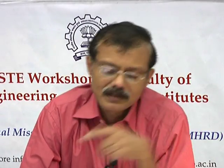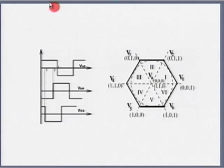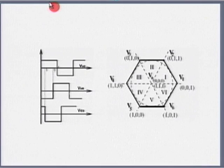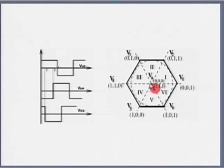If I know the d-axis and q-axis components, it is possible to determine the instantaneous values of Va, Vb, and Vc. In a 3-phase voltage source inverter there are 3 legs; at any given time 3 devices are on, giving 8 possible conducting states. Two of these are zero voltage vectors in which all three upper devices are either on or off — the magnitude of the space vector is 0. The remaining six vectors are the active vectors, occupying the six vertices of a hexagon.